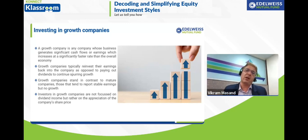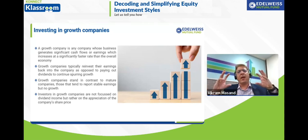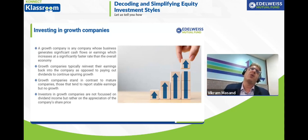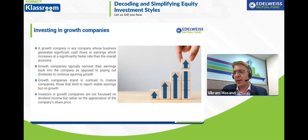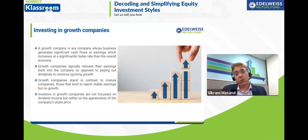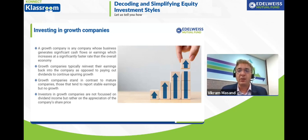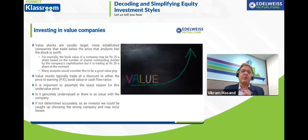Mature companies are usually the ones that pay dividends — they have reached a certain growth rate and are happy with it, choosing to return profits to investors as dividends rather than reinvesting heavily. Growth companies, by contrast, see opportunity and want to grow faster, so they invest back into the business.